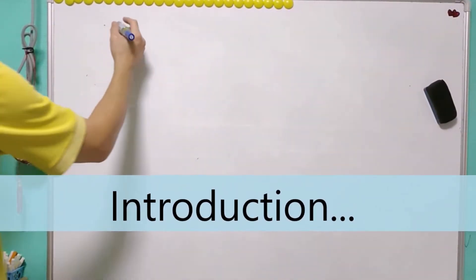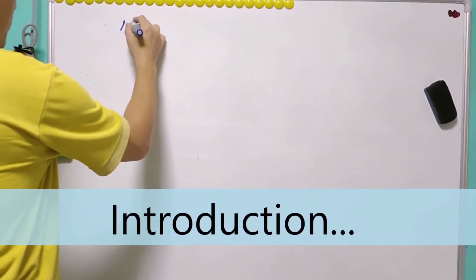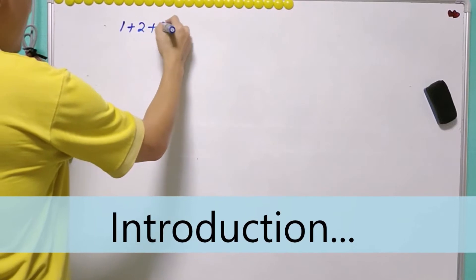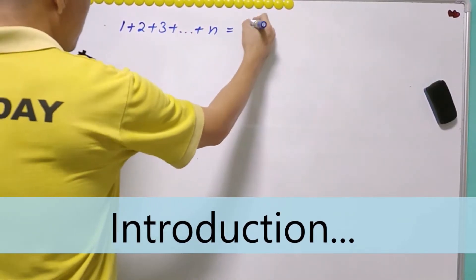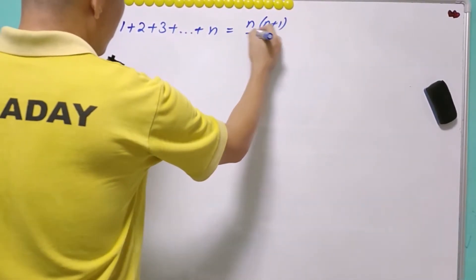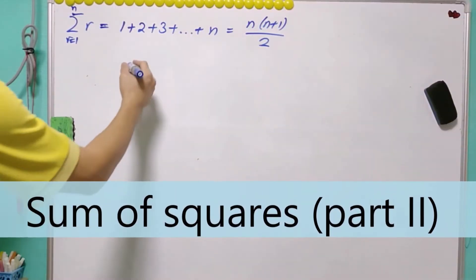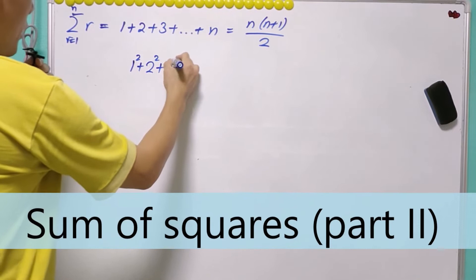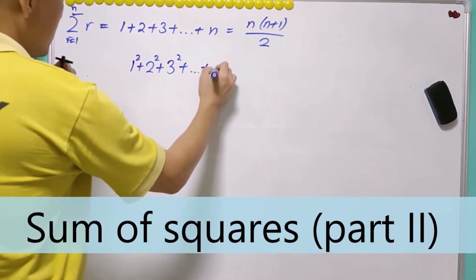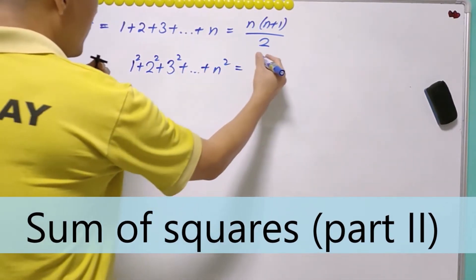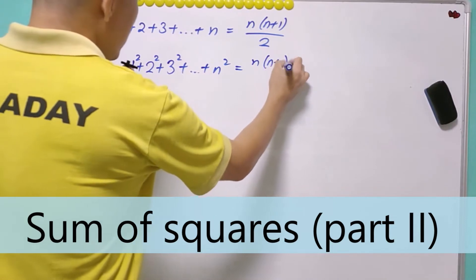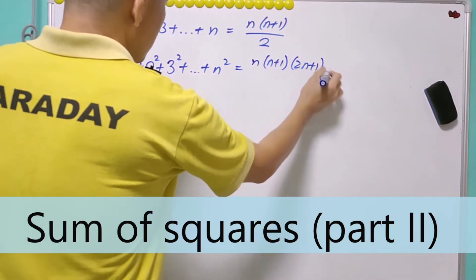Now, it is well known that the sum of the first n natural numbers is equal to n(n+1) over 2. It's natural to ask what would be the sum of the square of the first n natural numbers. And this turns out that it is n(n+1)(2n+1) over 6.